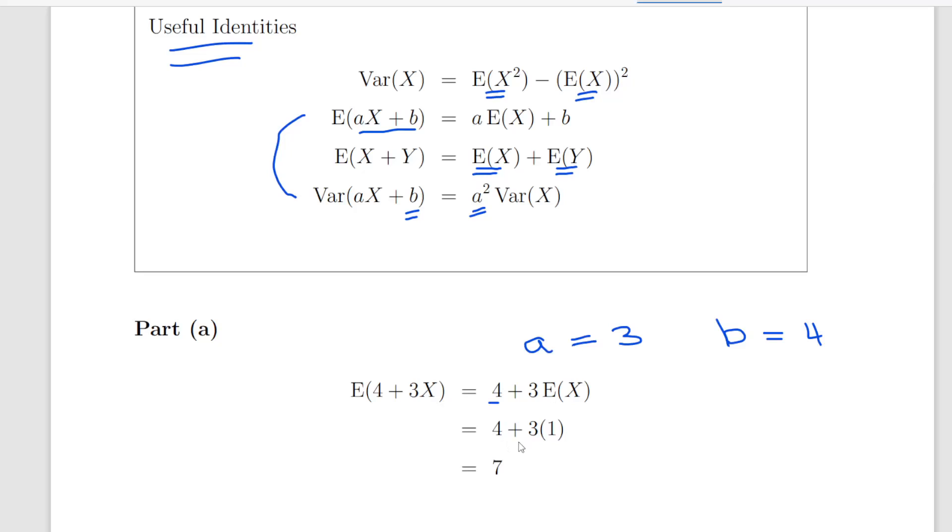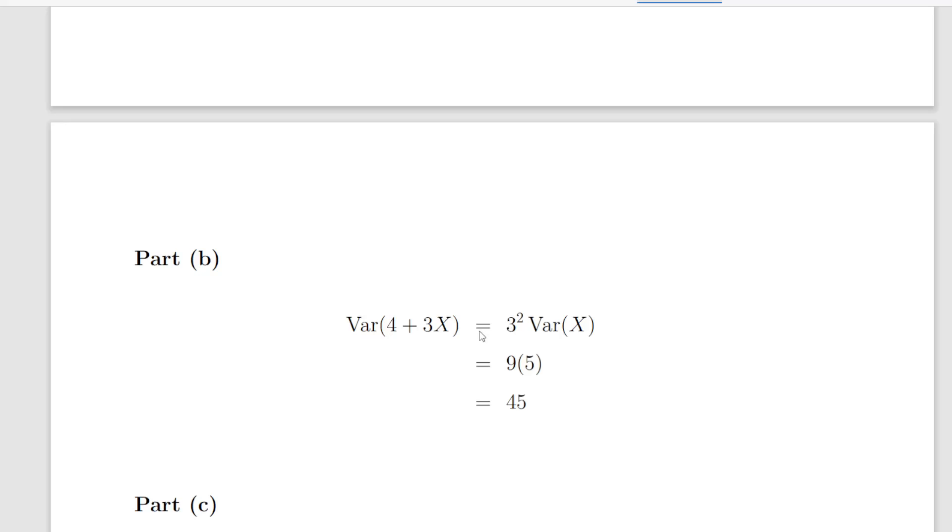Part b is the variance of 4 plus 3X. We can disregard b which is 4, but we need a. That's essentially the variance of 3X, which is 3 squared times the variance of X, which is 9 times 5, and that is 45.